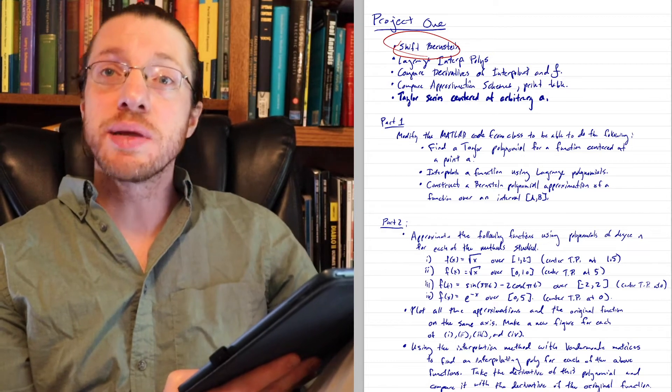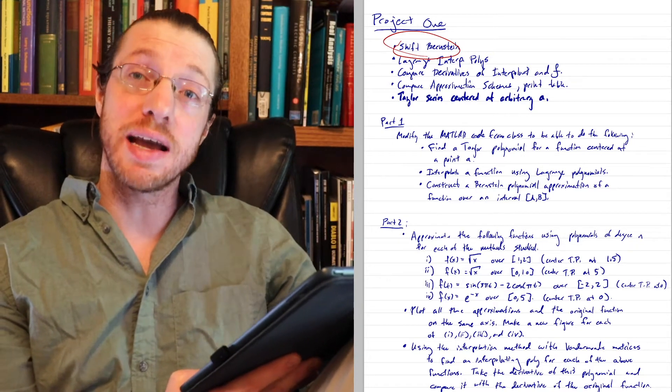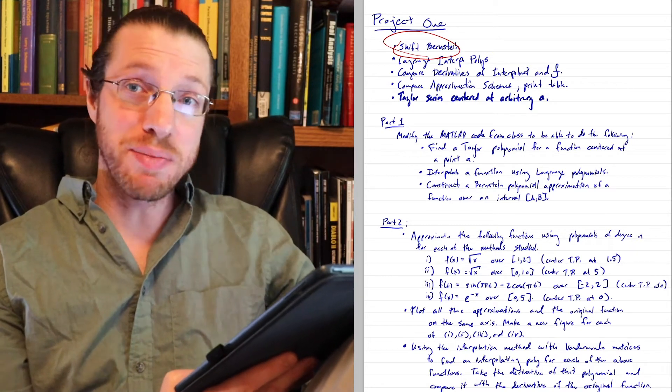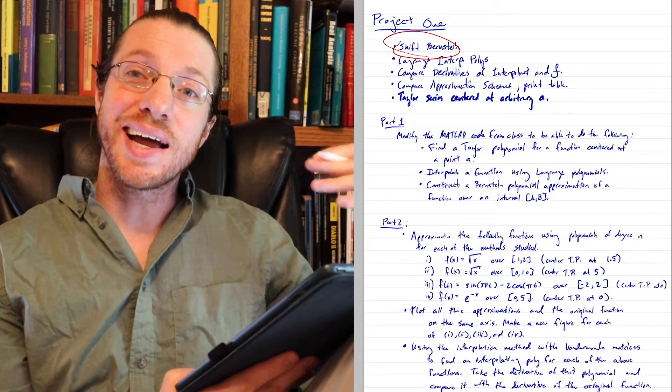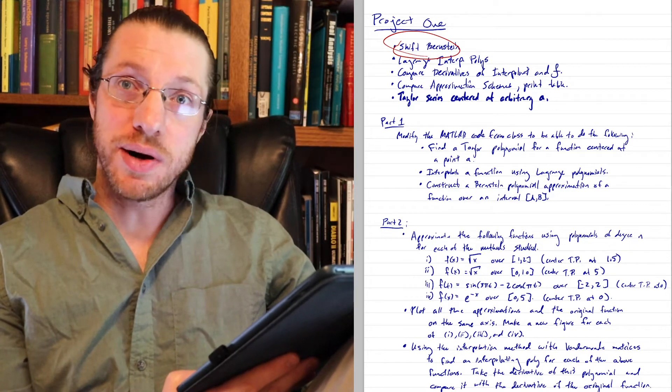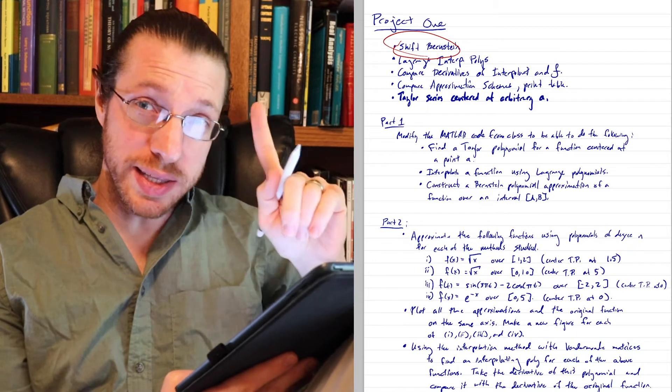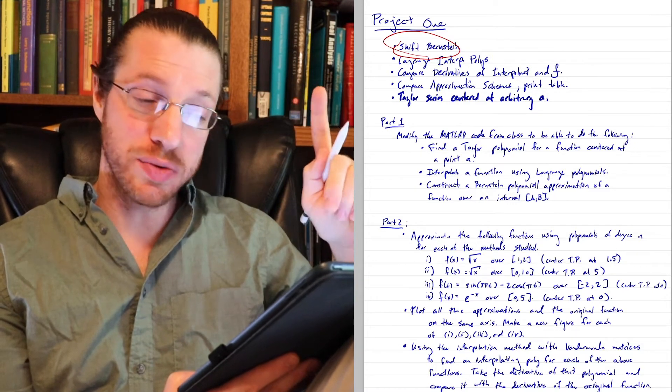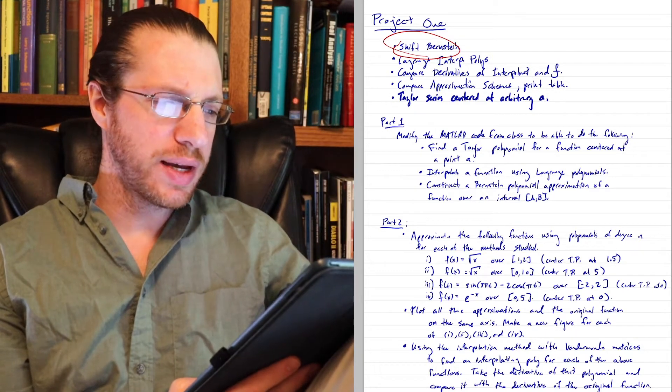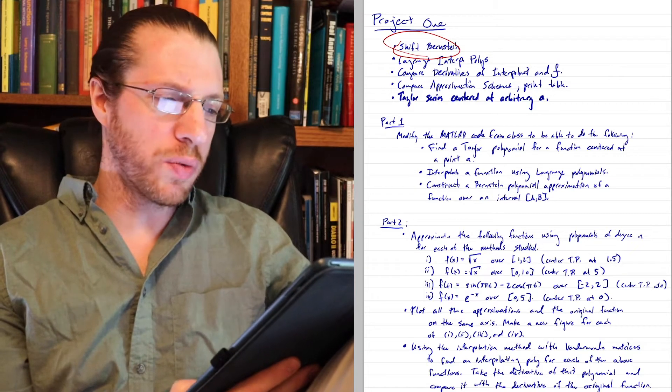And so I basically want you to be able to manipulate the approximation scheme that I already gave you. Same code, you can even copy and paste the code as much as you need, and then implement the Bernstein polynomial approximation. And so there's one thing to figure out there and that's how to shift things around and that's up to you.